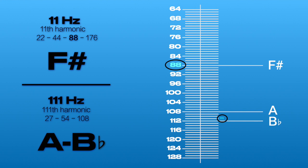111 Hz is the 111th harmonic, which is a flat B-flat, 3 Hz above harmonic A at 108 Hz. 111 Hz is a microtone between the earlier chromatic notes of A and B-flat.